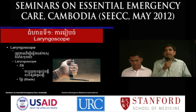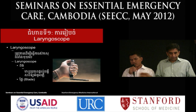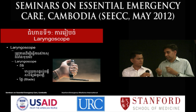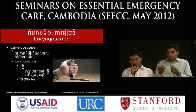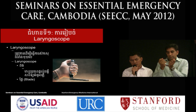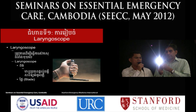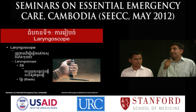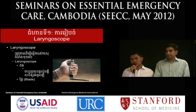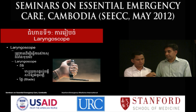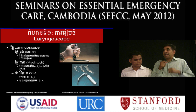The next device is the laryngoscope. There are two parts: the handle, which contains the power, and the blade, which contains the light. There are two types of blade: the straight blade, or Miller blade, and the curved blade, or Macintosh blade.